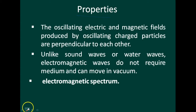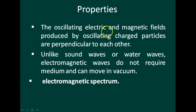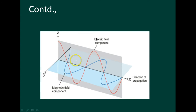The properties of electromagnetic waves: the oscillating electric and magnetic fields produced by oscillating charged particles are perpendicular to each other, and both are perpendicular to the direction of propagation of the wave. As shown in the figure, the electromagnetic wave propagates in one direction. The magnetic field component and the electric field component are shown separately.